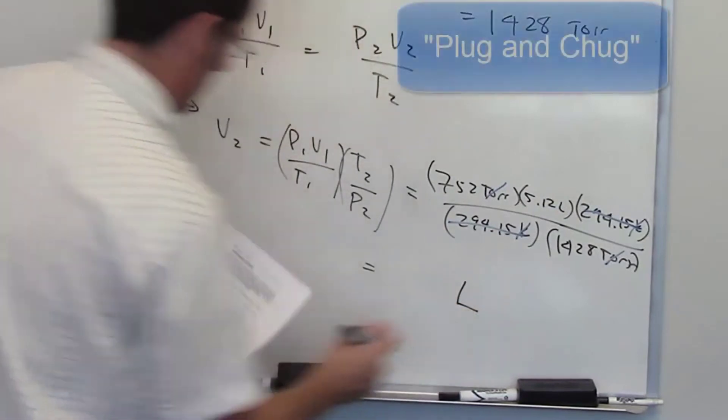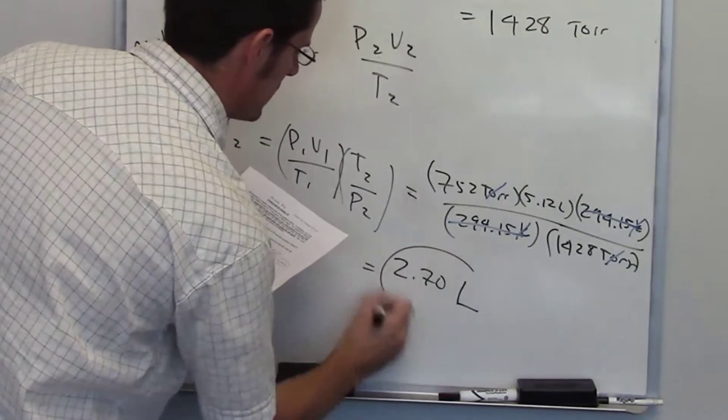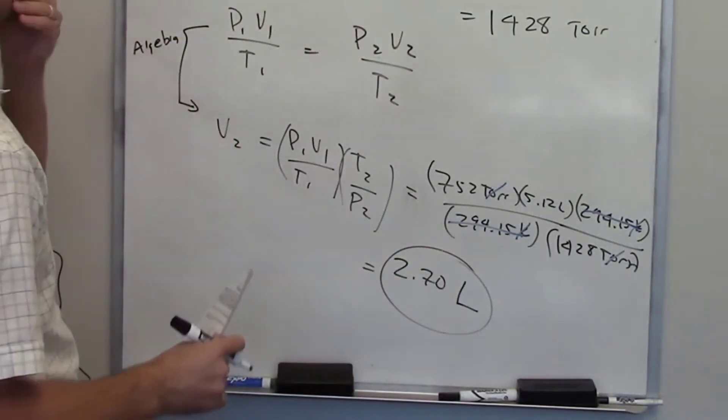You throw that in your calculator, plug and chug, the final answer ends up being, according to my calculations, 2.70 liters with hopefully the correct number of significant figures, three.